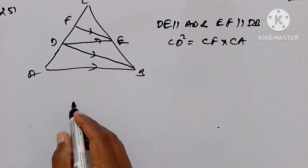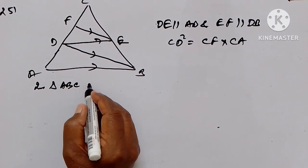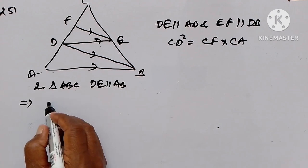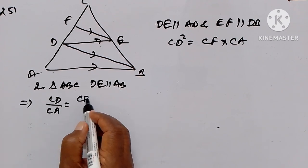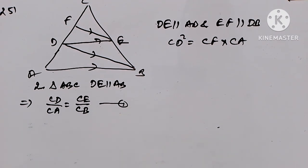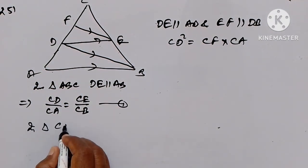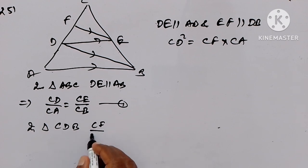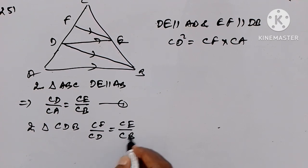To prove that CD² = CF × CA. First, in triangle ABC, since DE is parallel to AB, by the Basic Proportionality Theorem, CD upon CA equals CE upon CD — this is equation number 1. Similarly, in triangle CDB, since EF is parallel to DB, CF upon CD equals CE upon CD — this is equation 2.